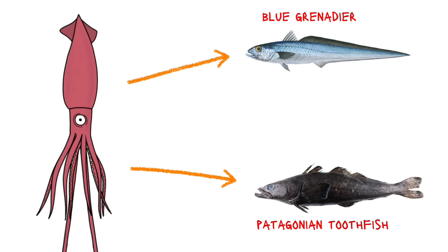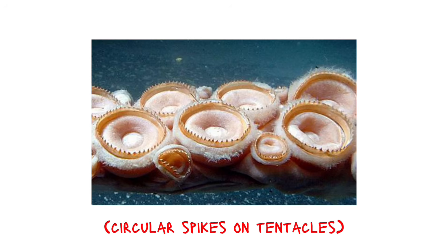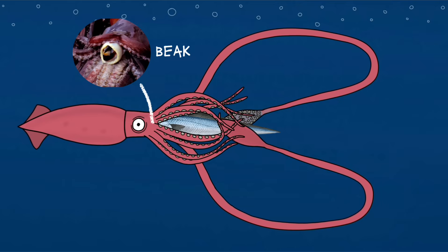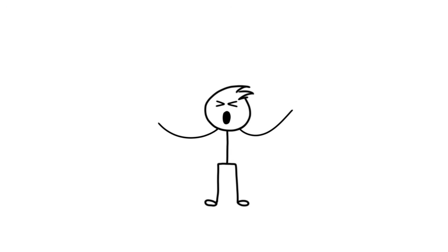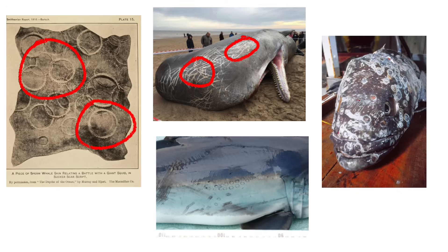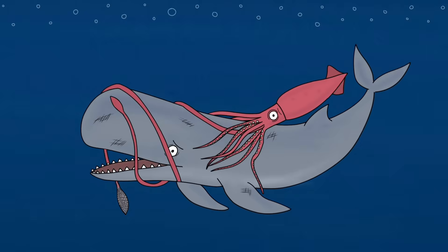Giant squids mainly eat deep sea fish and other squids. So yeah, they are kinda cannibals. They grab the prey with their circular spikes and bite with their powerful beaks. They even fight with sperm whales and sharks. Scientists have found circular bite marks on sperm whales and sleeper sharks. Also, undigested beaks of giant squid have been found in the whale's stomach too. So, there are some fierce battles in the dark, I guess.